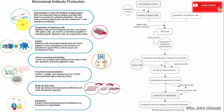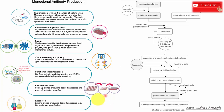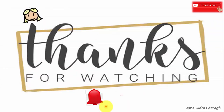In summary, the production of monoclonal antibodies involves: immunization of mice with the antigen; preparation of myeloma cells and fusion of myeloma cells with B cells removed from the spleen of immunized mice; clone screening and picking; functional characterization using ELISA to identify and validate high-producing colonies; scale-up of clones producing the desired antibodies; and finally expansion of clones that produce the desired antibody.